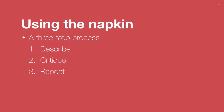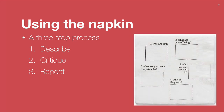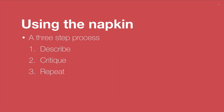Using the Napkin is really simple — a straightforward three-step process. In step one, either working individually or with your team, you answer five questions that help you describe the idea: who's involved, what are you offering, who are you offering it to, why would that person care, and do you have any core competencies? Step two involves critiquing the idea to establish whether it's impactful — creating value for a clearly defined customer — and feasible to deliver. Step three requires you to repeat the process if necessary, cycling through describing and critiquing until you arrive at a genuine opportunity.